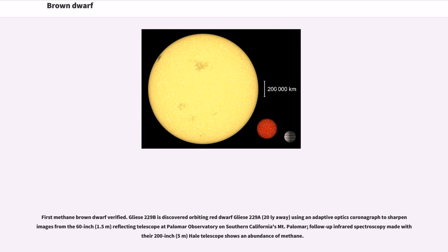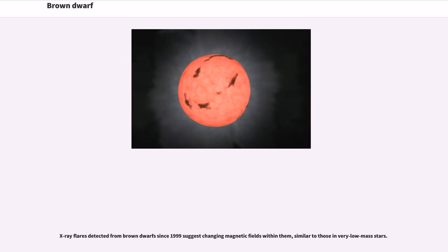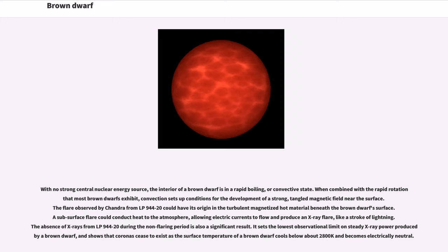The first methane brown dwarf verified, Gliese 229B, was discovered orbiting red dwarf Gliese 229A using an adaptive optics coronagraph to sharpen images from the 60-inch reflecting telescope at Palomar Observatory. Follow-up infrared spectroscopy made with the 200-inch Hale telescope shows an abundance of methane. X-ray flares detected from brown dwarfs since 1999 suggest changing magnetic fields within them, similar to those in very low mass stars. With no strong central nuclear energy source, the interior of the brown dwarf is in a rapid boiling or convective state. When combined with the rapid rotation that most brown dwarfs exhibit, convection sets up conditions for the development of a strong tangled magnetic field near the surface.